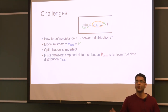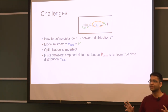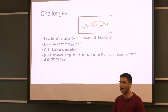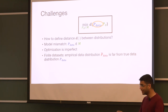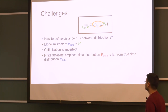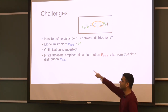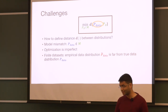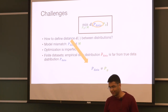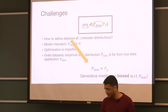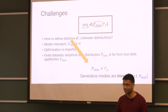Even if all goes well, we cannot get rid of the difficulty that we are always dealing with finite data sets. So what we have access to is the empirical data distribution, and if our data set is really small, this empirical data distribution p-hat might be very far from the true data distribution p. All these in practice imply that when we train these models, we might not be able to recover the true data distributions — in other words, these generative models are biased with respect to p-data.